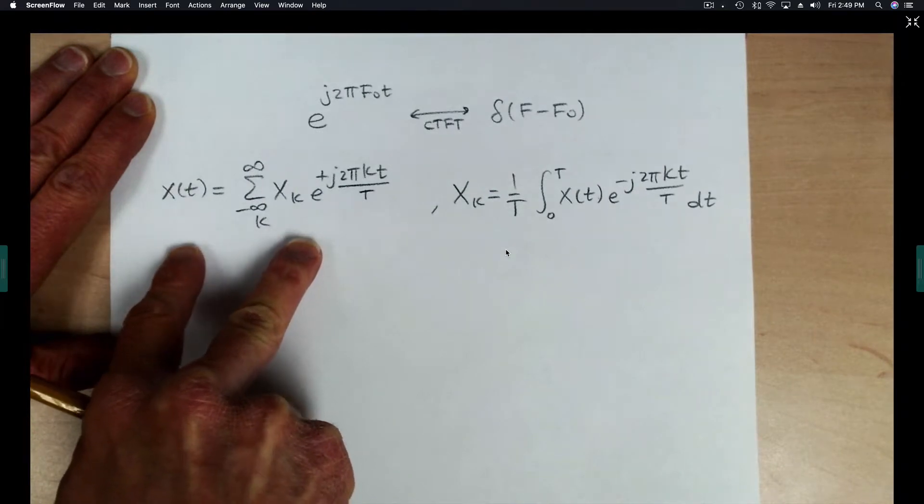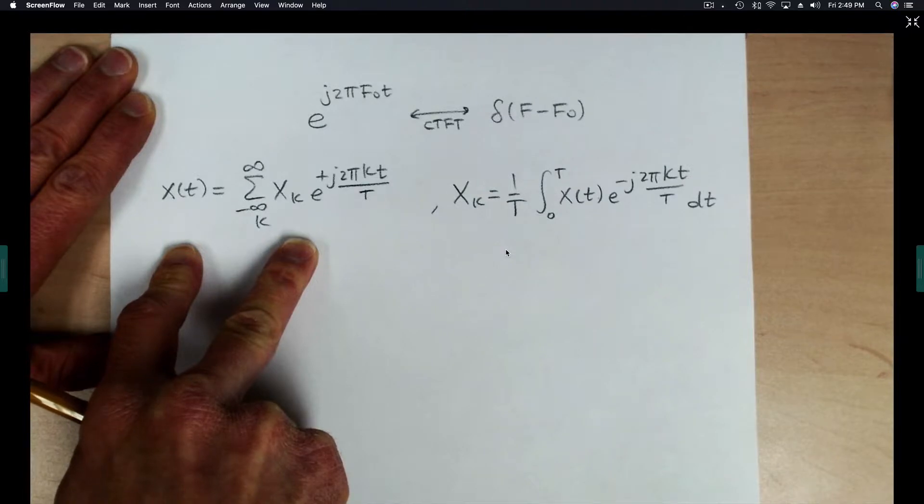To calculate the Fourier transform of a periodic signal, all we have to do is compute the Fourier transform of both sides of the Fourier series expansion.